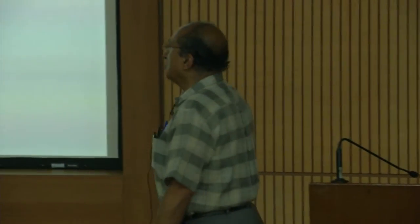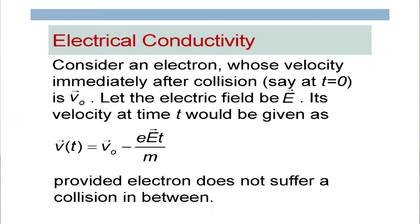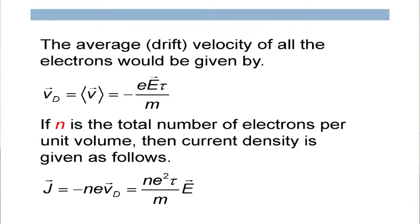What we are interested in is the average velocity over all electrons, because that gives rise to the current. This is called the drift velocity averaged over all particles. When we take the average, since the velocity after collision becomes random, the average of v₀ is zero. The average of t gives the relaxation time τ. So the drift velocity is v_d = −eEτ/m. This is the drift velocity — the electron is essentially drifting, similar to how air drifts in a breeze.